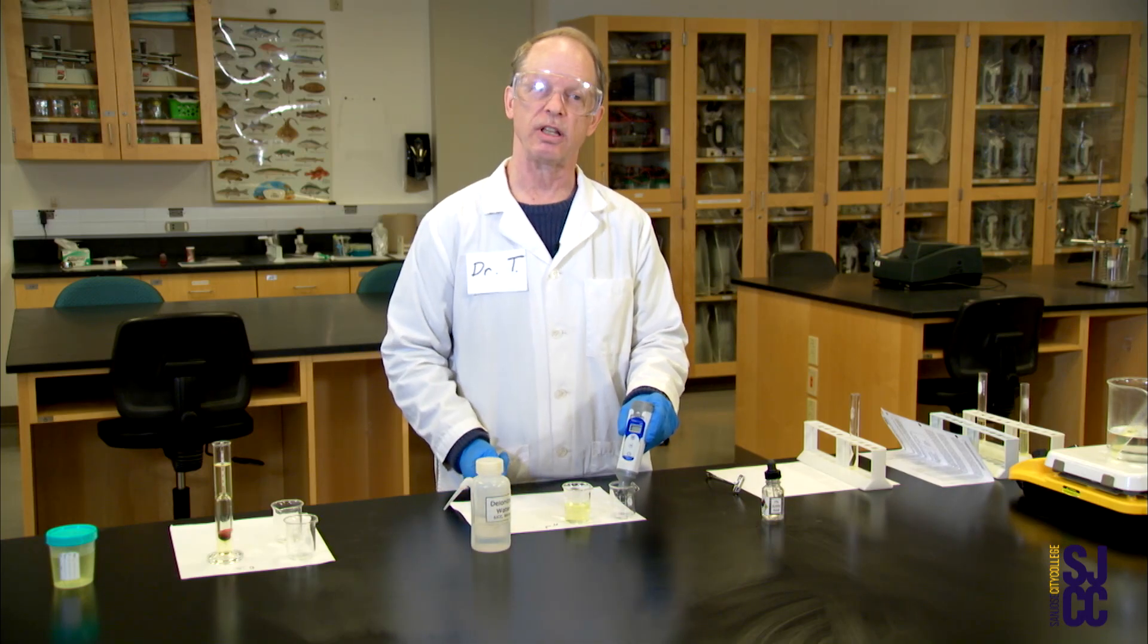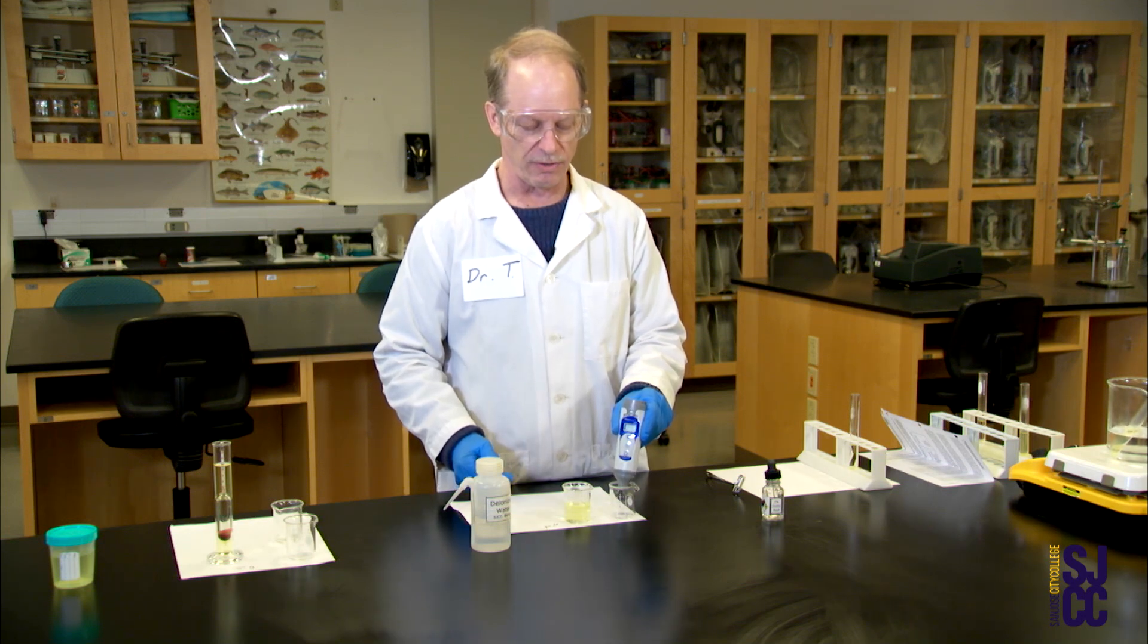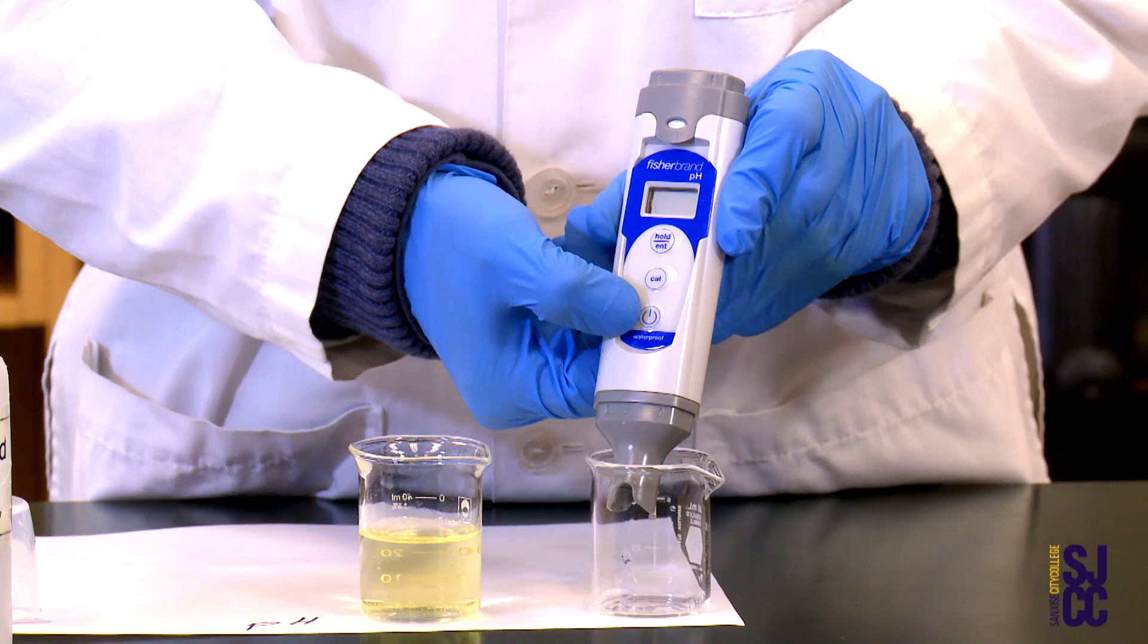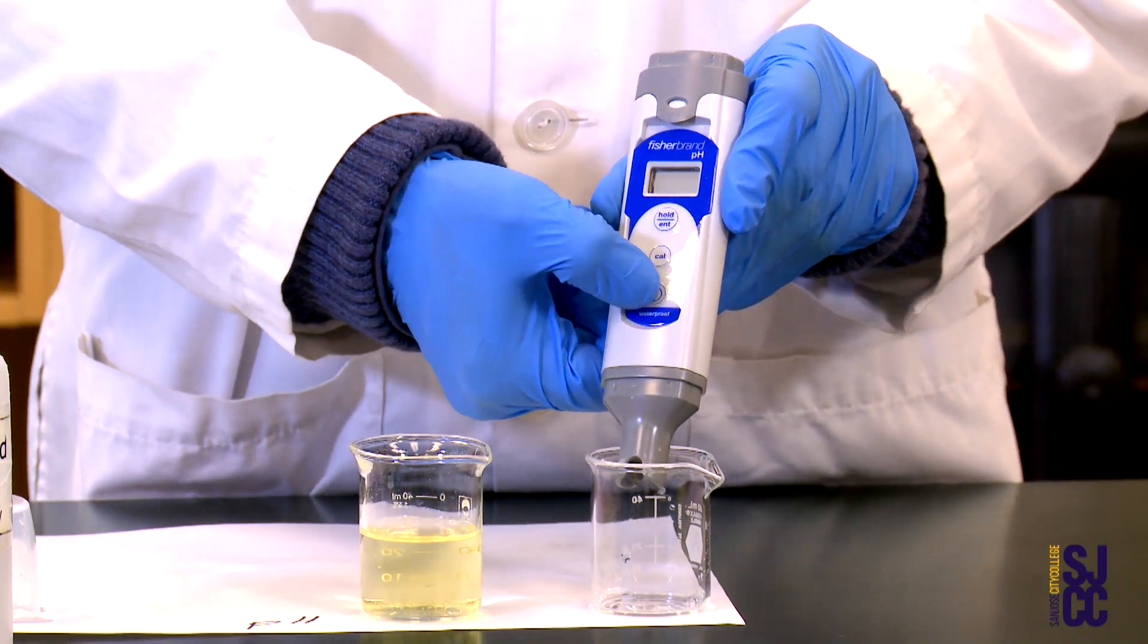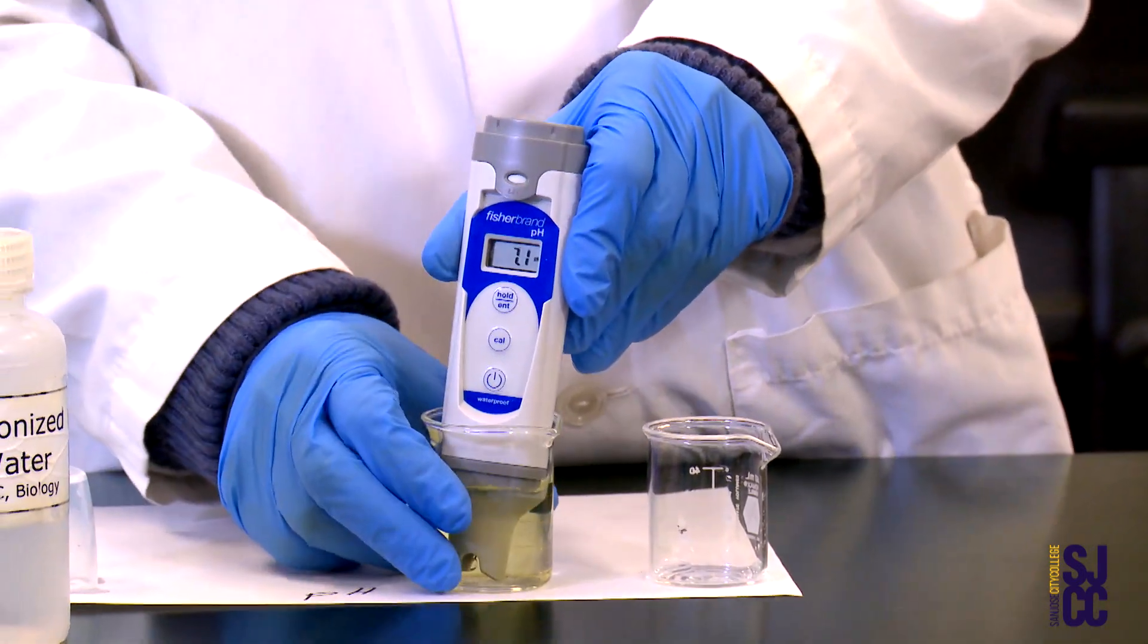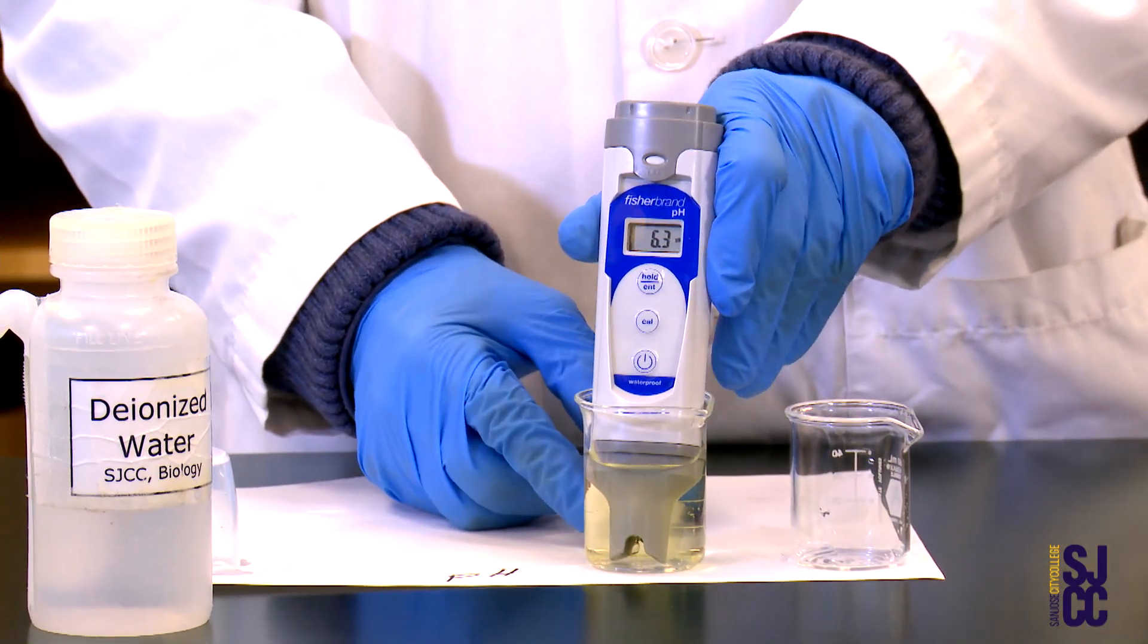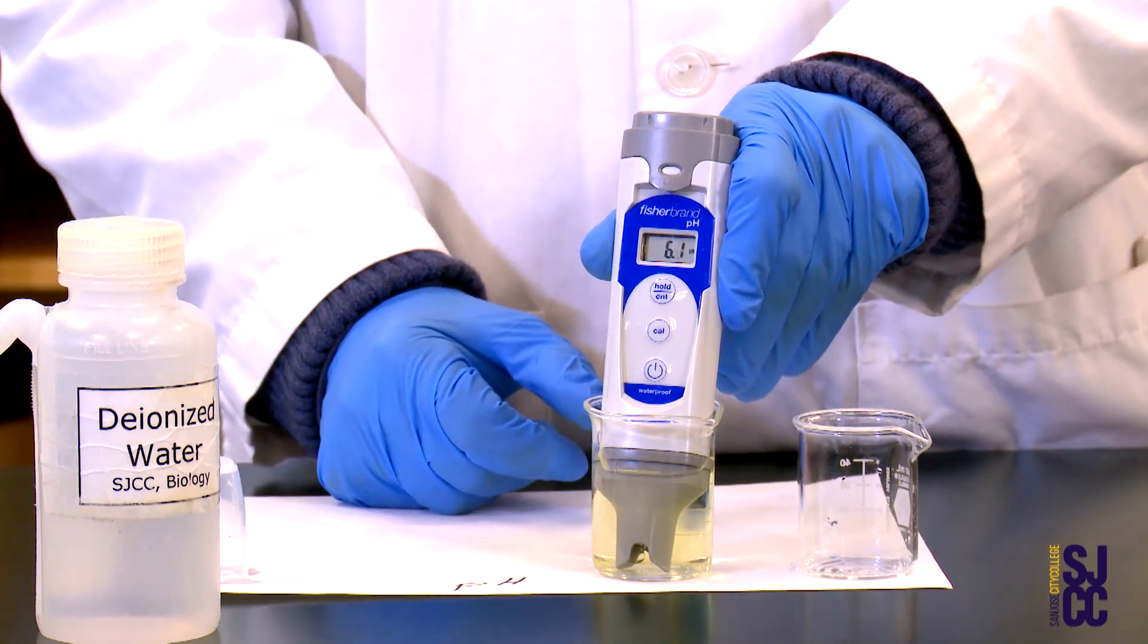I clean it when we start and then clean it again when we finish. Operation is very simple because it's got this button down here that implies power. I just turn the power on like so. I dip it into the urine solution like so - it just happens to fit in a 50 ml beaker like this.